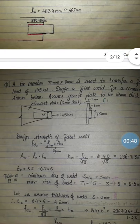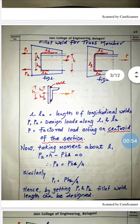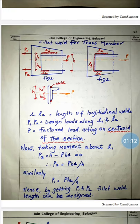After that, the next part I started in class is the design of fillet weld for truss members. Truss members are nothing but angle sections. We can provide the length of weld as longitudinal weld, or we can provide both longitudinal and transverse weld. The longitudinal weld is l1 and l2, and if you want to provide transverse weld, l1, l2, and l3 — where l3 is the transverse weld, as shown in Figure 1 and Figure 2.